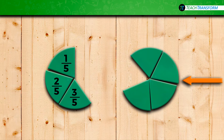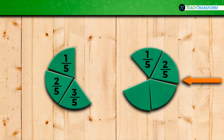Now point at the four-fifths. For four-fifths, you should have four of the fifths and the fifth one would complete the circle. Count them out loud: one-fifth, two-fifths, three-fifths, four-fifths.